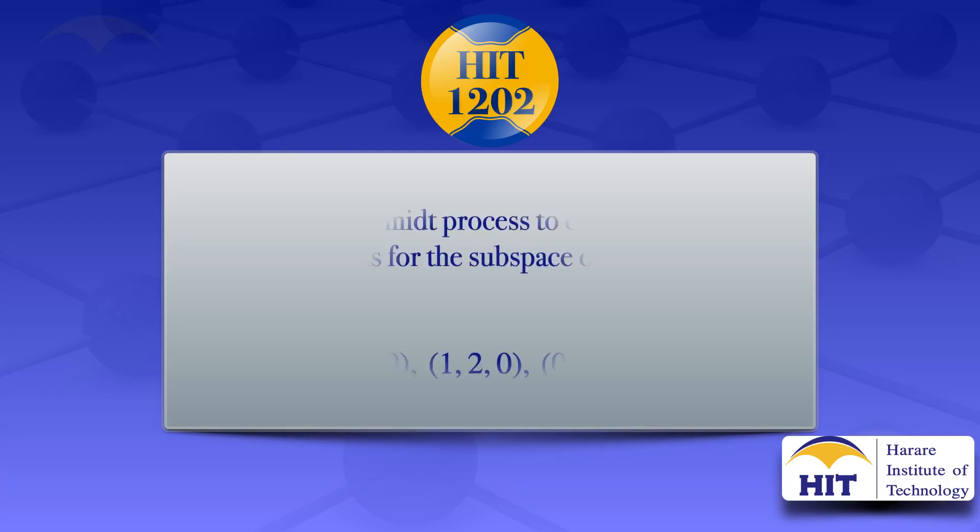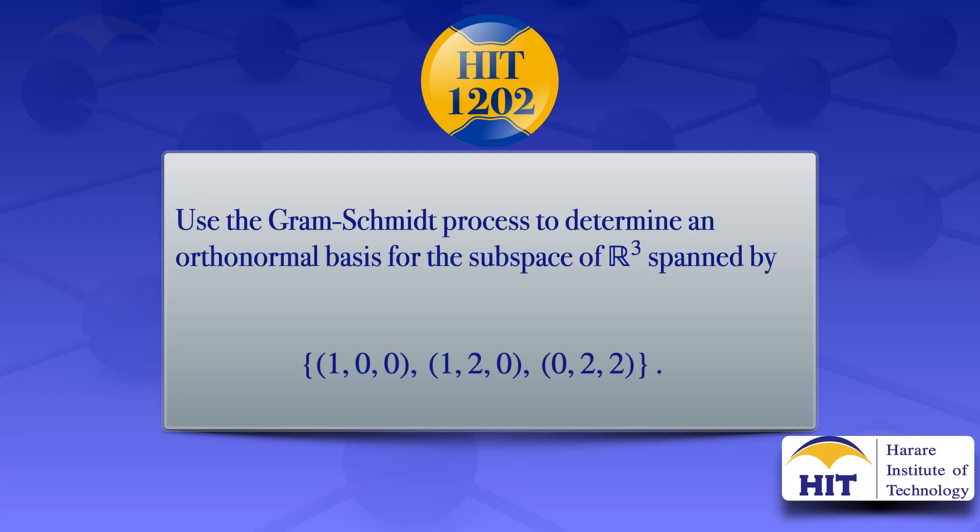In this tutorial we are going to use the Gram-Schmidt process to determine an orthonormal basis for the subspace of R3, spanned by the three vectors (1, 0, 0), (1, 2, 0), and (0, 2, 2).